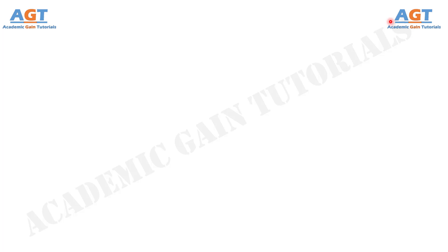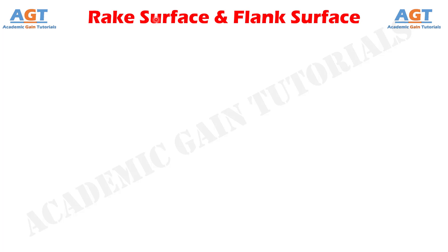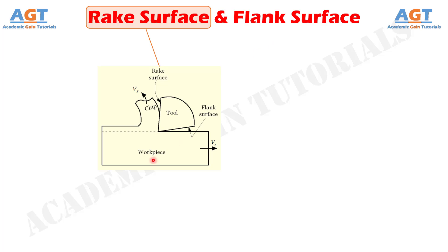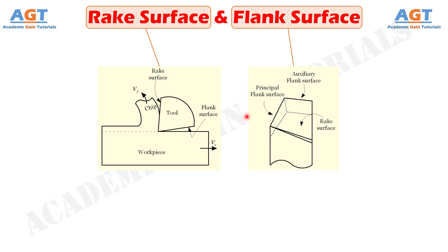Welcome to Academic Game Tutorials. In this video, we will look into the differences between rake surface and flank surface. Rake surface is the surface over which the chip formed in the cutting process slides. Flank surface is the surface over which the surface produced on the work part passes. Presence of both surfaces in every cutting tool is mandatory. These two surfaces together constitute the cutting edge.